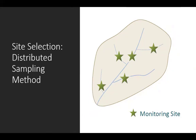We can also use a distributed sampling approach — essentially what we did in lab three with nitrogen and phosphorus sampling. For the Grand River watershed, we would sample the Red Cedar, the Grand River, Sycamore Creek, the Looking Glass River, and all tributaries to get a better picture of water quality throughout the watershed.